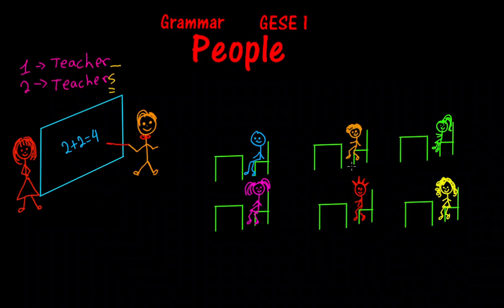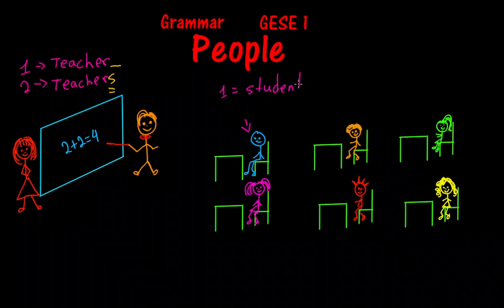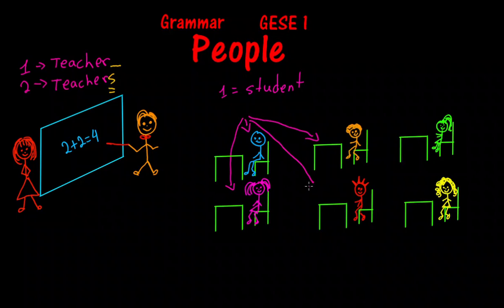So let's look over here. If we talk about this student — this student is one — we would write 'student'. But if we were to talk about this student and that student and this student and that student, that would be 'students', and that would finish with an S.